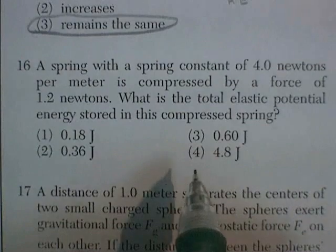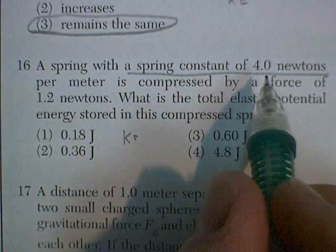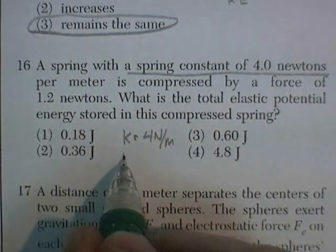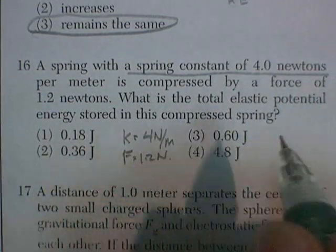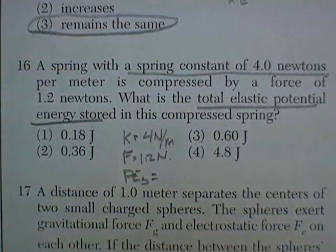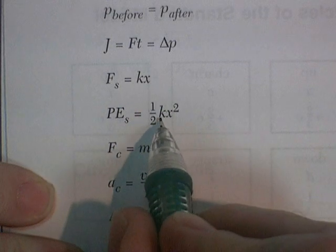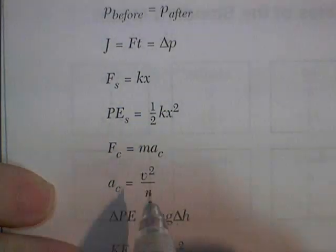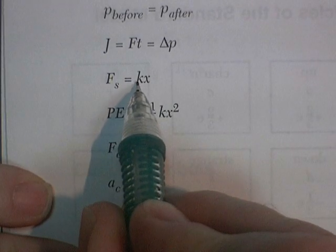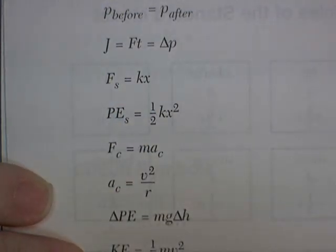Question 16. A spring with a spring constant, that's K, of 4 newtons per meter, is compressed by a force of 1.2 newtons. What's the total elastic potential energy? Well, the potential energy in the spring is 1/2 kx squared. K is the spring constant. X is the distance it's been stretched. We don't know X. However, the force on a spring is equal to kx. So we have k, we have f, we could find x, and then we could use this equation. So it'll take a little bit of math here.